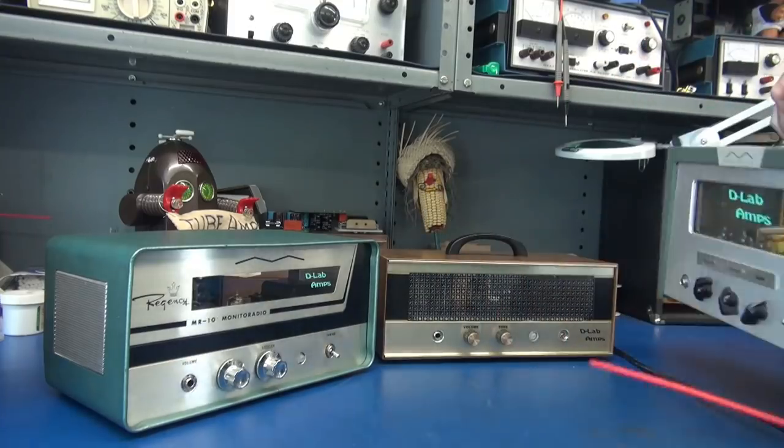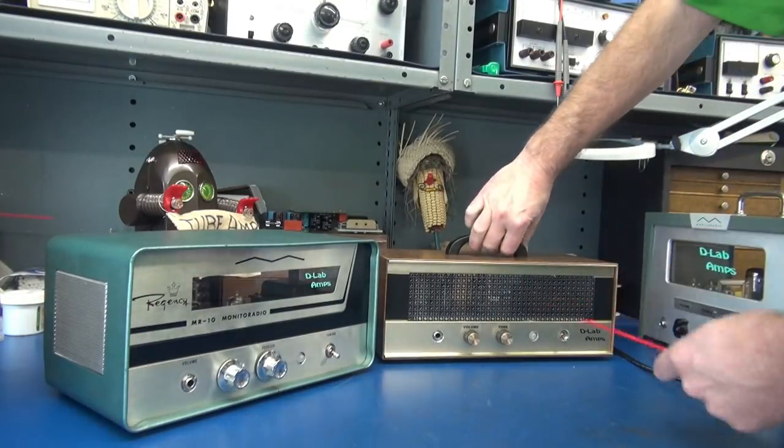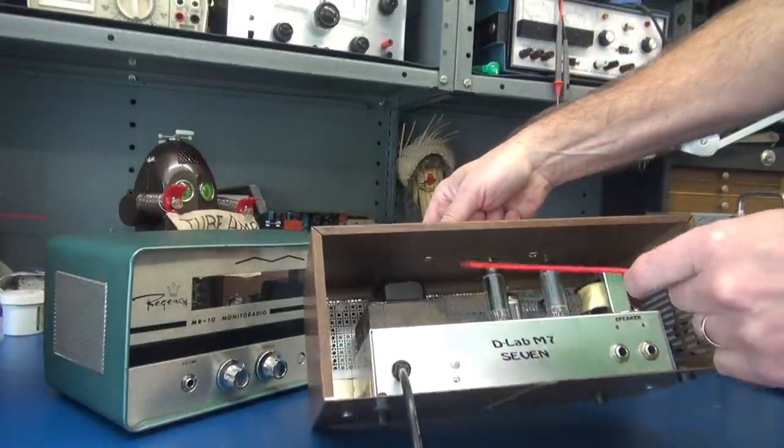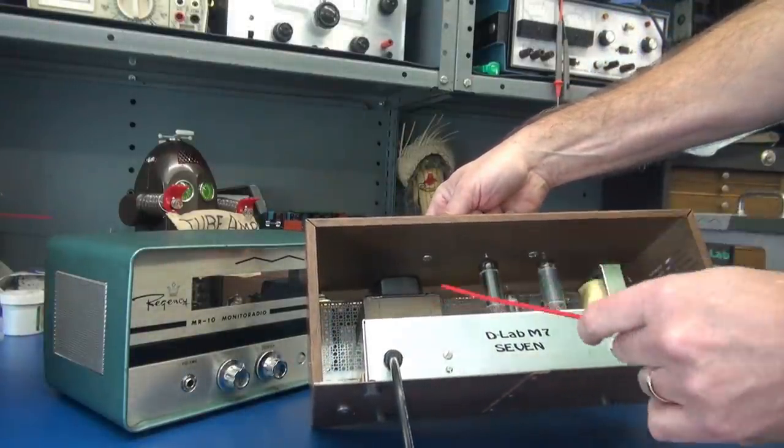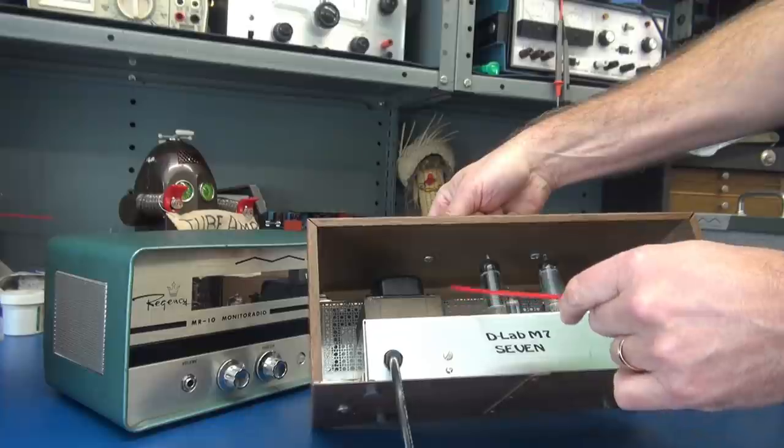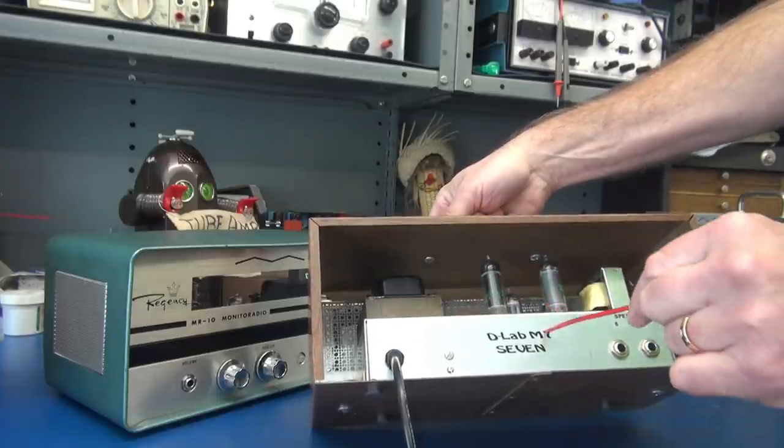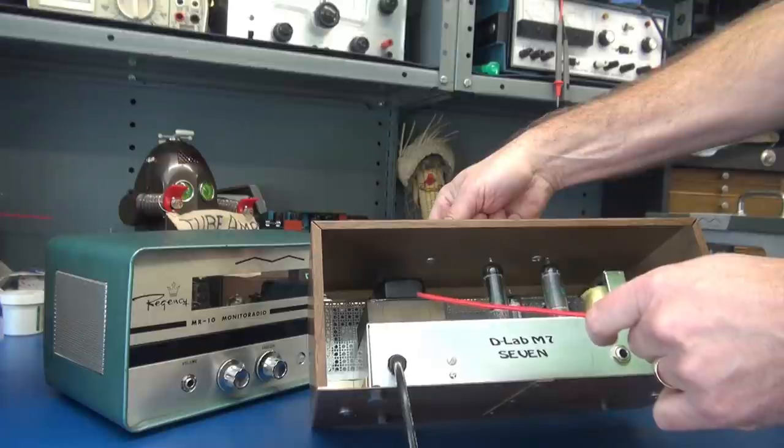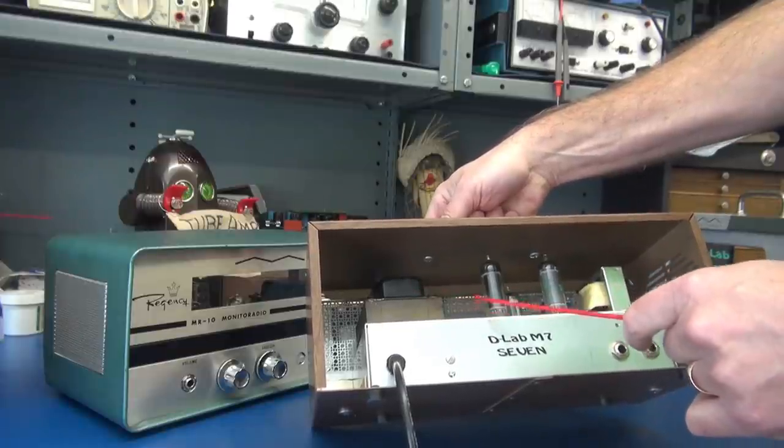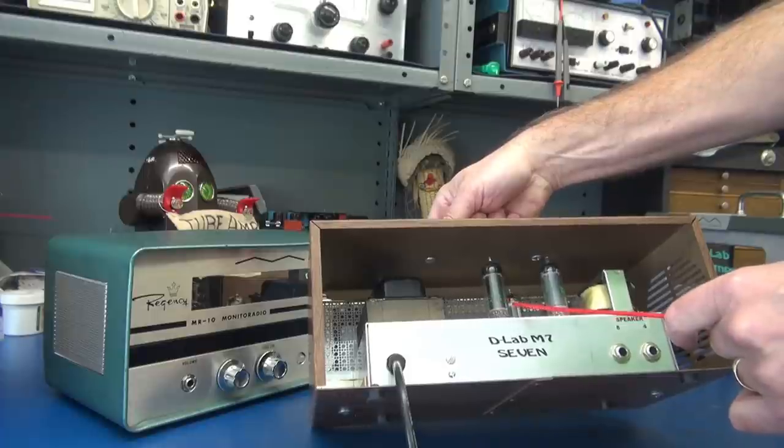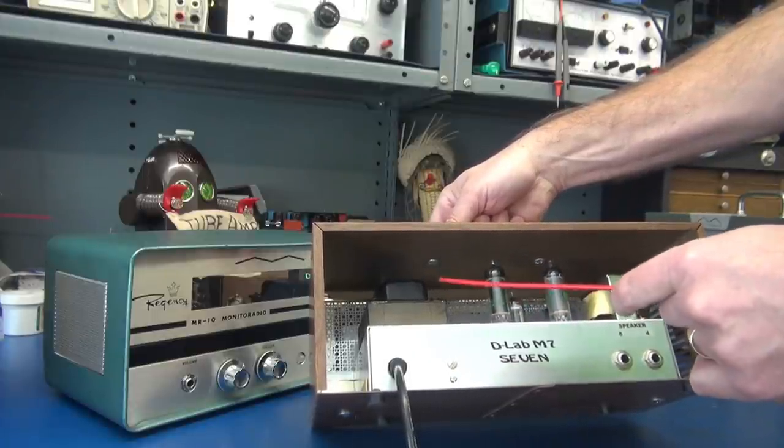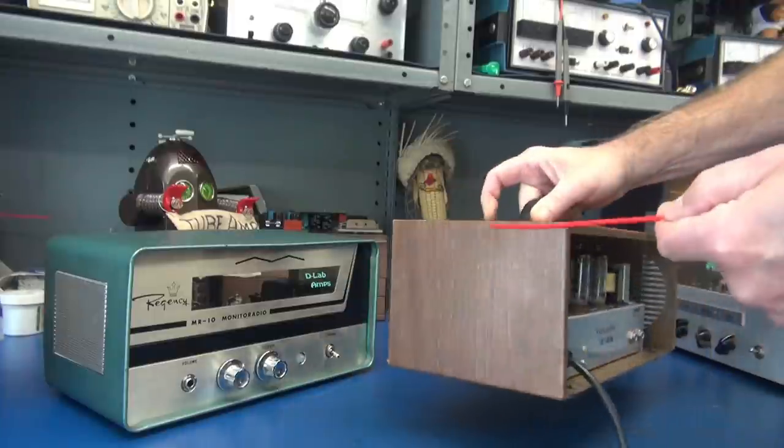We got the Model 7 here which also runs that same power transformer, but in this case I had to mill the chassis and mount him horizontally so it would clear when I installed the chassis. Once again, same transformer, same B plus, and now I'm feeding a pair of push-pull 6AQ5s.